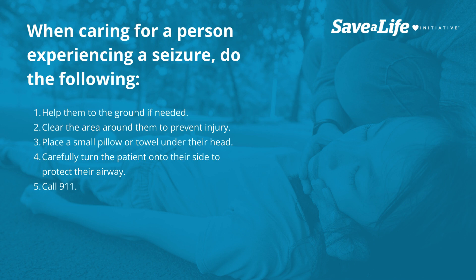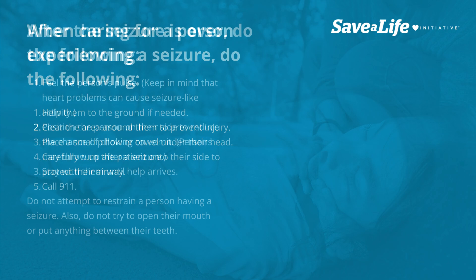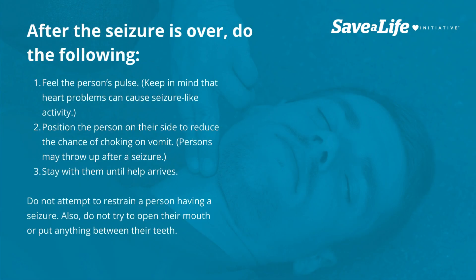4. Carefully turn the patient onto their side to protect their airway. 5. Call 911. After the seizure is over, do the following. 1. Feel the person's pulse — keep in mind that heart problems can cause seizure-like activity. 2. Position the person on their side to reduce the chance of choking on vomit, as persons may throw up after a seizure. 3. Stay with them until help arrives.